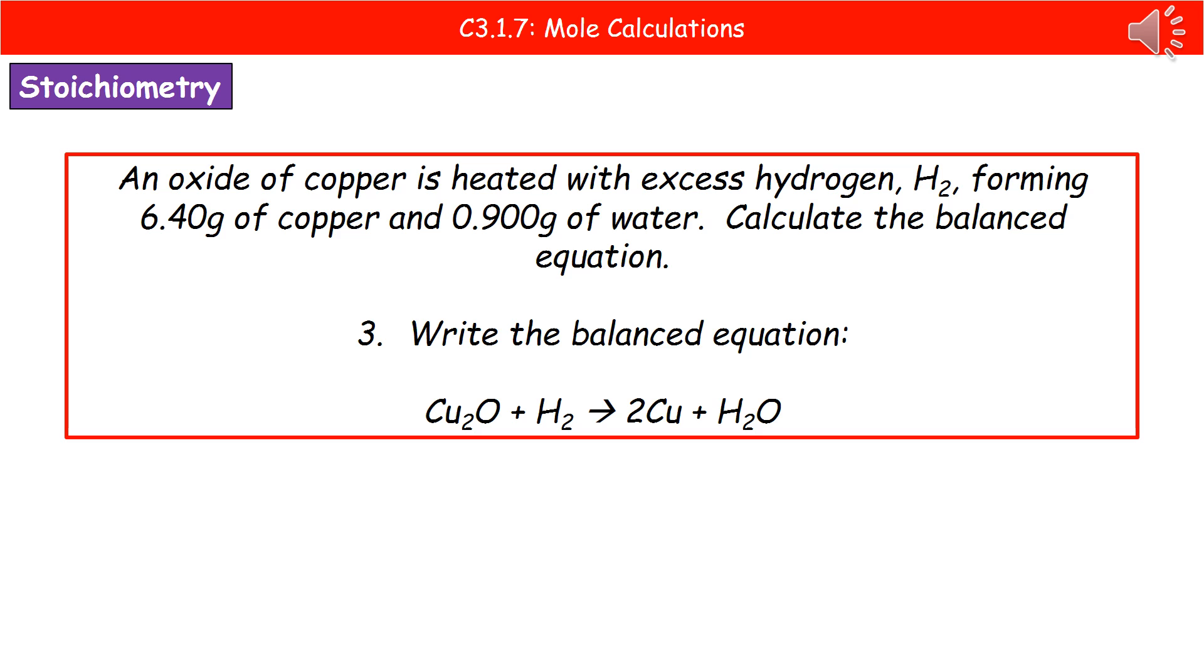Looking at our equation there, in terms of our products, we've got 2 copper atoms, 2 hydrogen, and 1 oxygen. If we look at our reactants, we've got the 2 hydrogens, so they're cancelled out. That leaves us with 2 coppers and 1 oxygen. So that's obviously going to form our copper oxide.